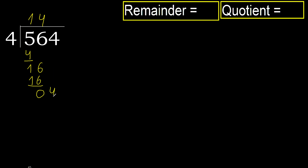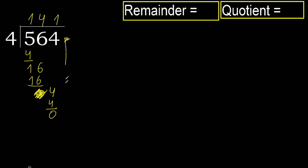Next. Eliminate 0 here, ok. 4. 4 multiplied by 1 is 4. It is not greater, ok. Subtract. Next: there is no more number, therefore finish it.